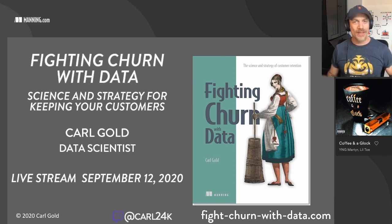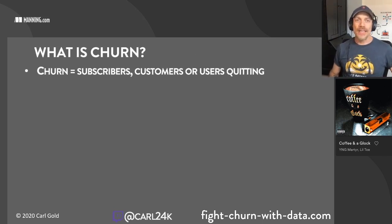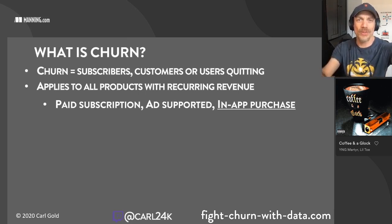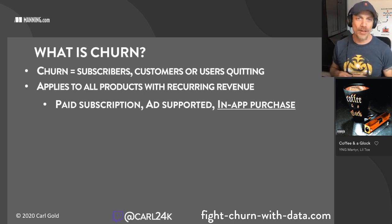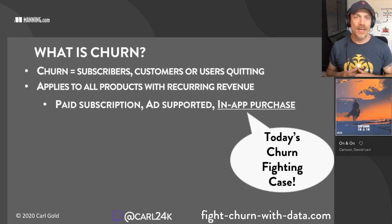To start out with, for those who aren't in this area, we want to answer: what is churn, and why do we fight it? Churn is customers or users quitting your service. Churn is an important issue for any product or service with repeat users or customers where you want recurring revenue. That can include paid subscription products, ad-supported products, and products with in-app purchases. In-app purchases are of special interest today because we're going to look at a case study — a churn-fighting case of a company that is an in-app purchase system. It's an e-book website.